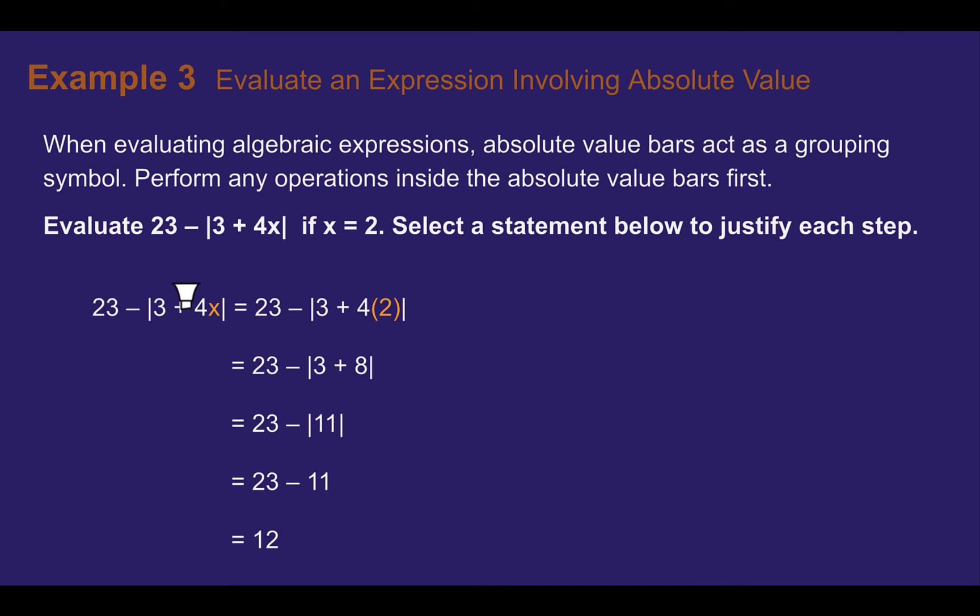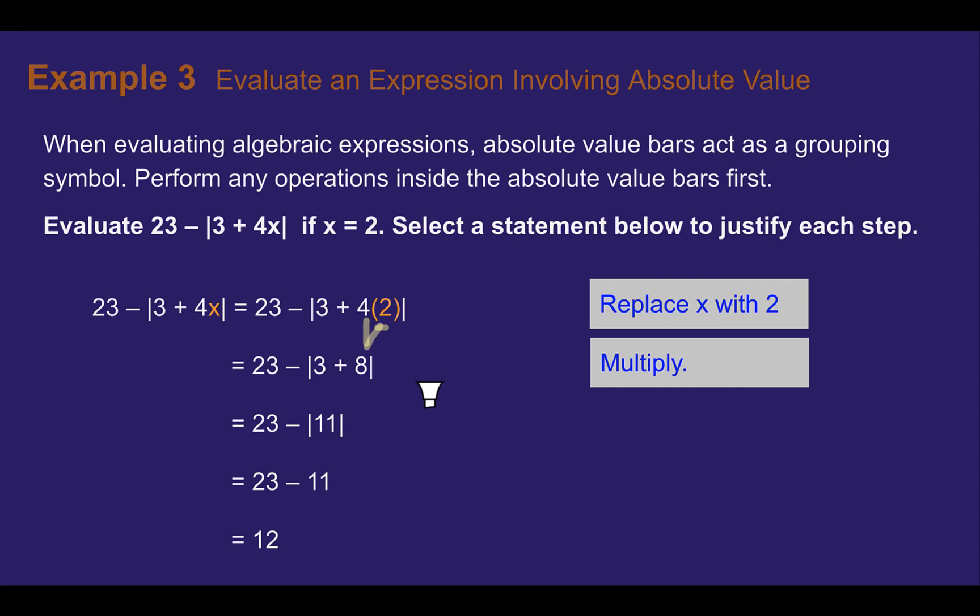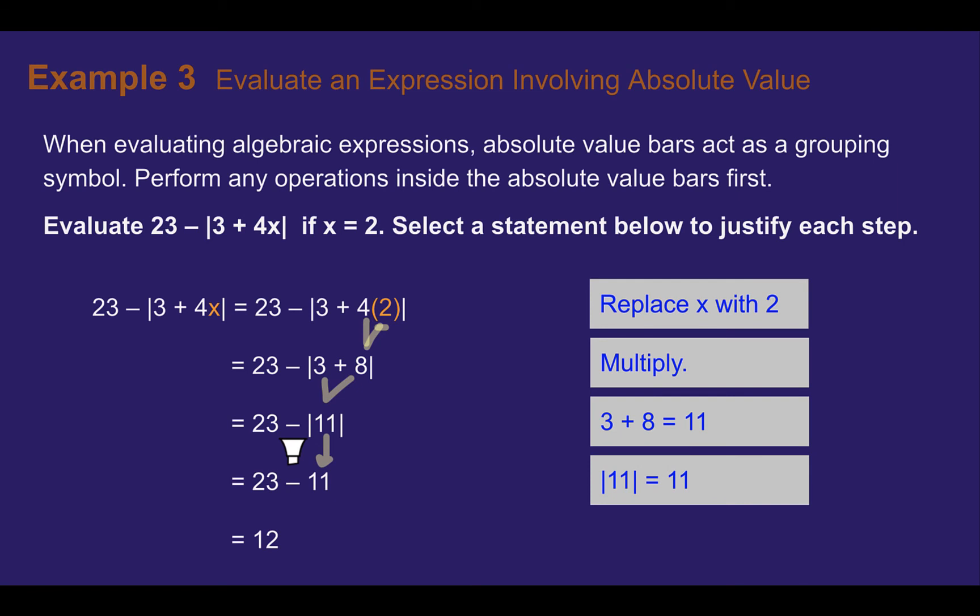So we have 23 minus 3 times the absolute value of 4x. First we're going to substitute in 2. So we're replacing x with 2. Now we're going to do order of operations within the parentheses. So 4 times 2 is 8. So we're going to multiply. We're still simplifying absolute value first. So 3 plus 8 is 11. Now we need to take the absolute value of 11 which is positive 11. And then that minus out front puts it right back to negative. So the absolute value of 11 was 11. And then finally now that our absolute value is gone we can do everything outside of it. So here there was only the 23. 23 minus 11 is 12. We just got that by subtracting or simplifying.